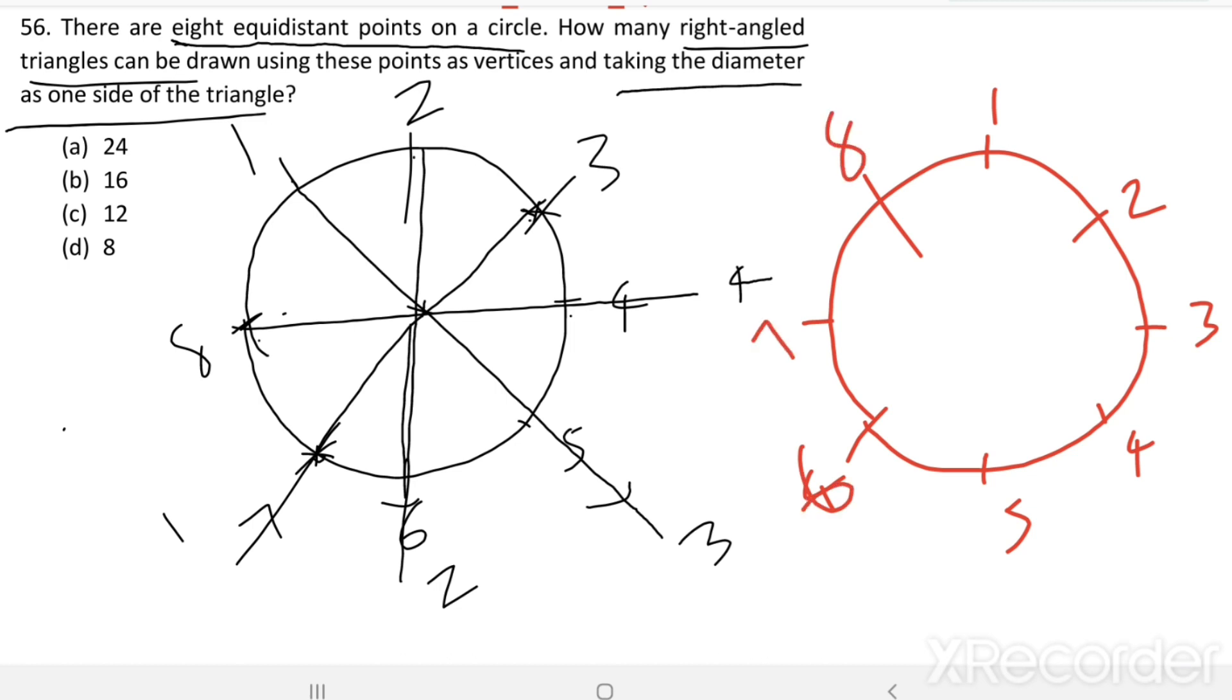I am joining 7 and 3. It is a diameter. Then, any triangle with the third vertex as a point on the circle, we get a right-angled triangle.